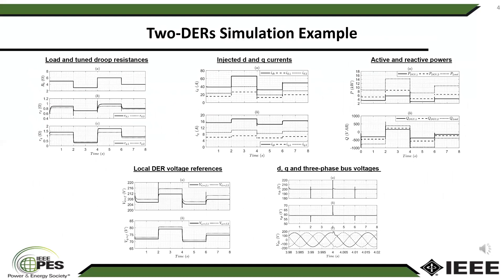The overall system was simulated for two distributed energy resources using Modelica in the OpenModelica software. The left-hand side at the top shows the load and also the tuned droop resistances. The center at the top shows the individual injected DQ currents in the DQ subsystem. On the right-hand side at the top shows the active and reactive powers injected into the bus, and the left-hand side at the bottom shows the individual local reference voltages in DQ coordinates.